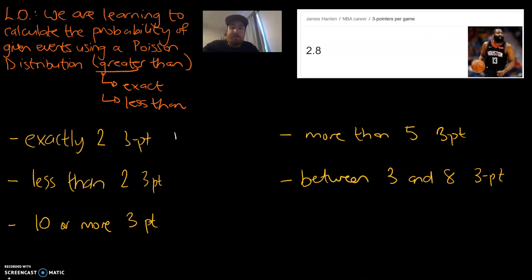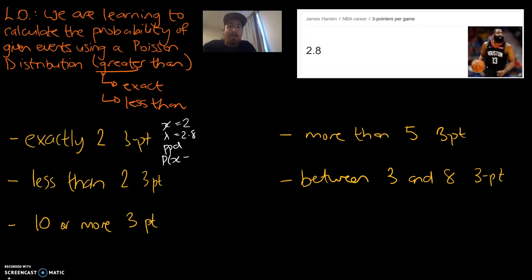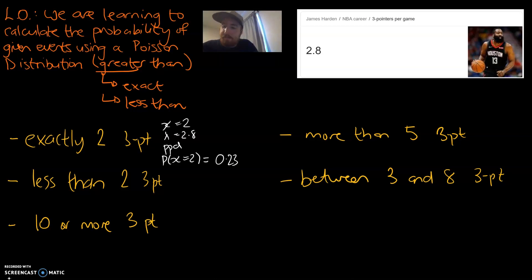The first one: what is the probability that James Harden lands exactly two three-pointers? Well, this is actually one of those exact questions. In that case, x was equal to two, the lambda was equal to 2.8, and because we're interested in exactly two, we're actually going to be using PPD mode. The probability of James Harden getting exactly two three-pointers: distributions, Poisson, PPD, x is 2, lambda is 2.8 — the probability of that is 0.2384. So nearly one in four times he's going to get exactly two three-pointers based on that average.